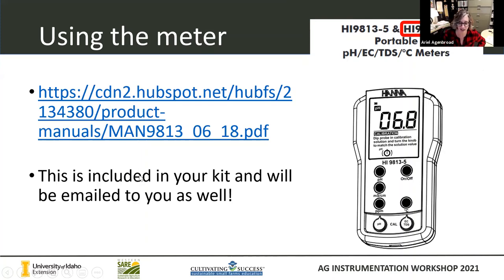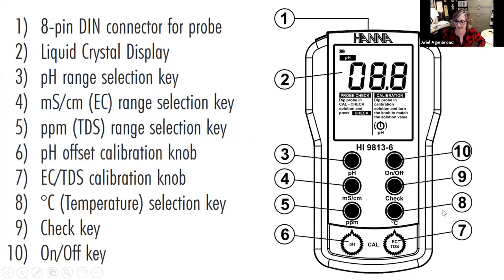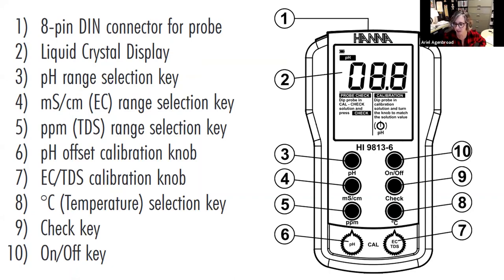Basically, this is the interface of your meter. You have a probe connector up here, an LCD display, and a bunch of buttons depending on what it is that you're going to be testing. Buttons four and five are your EC measurements — you can either measure in millisiemens per centimeter or in parts per million. You've got your pH, your temperature, on and off, and then there's a check key which is exclusive to this model. You also have calibration knobs six and seven — these are actual knobs that you can turn to help with calibration of the instrument.